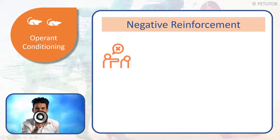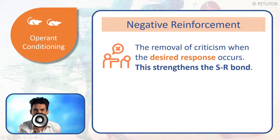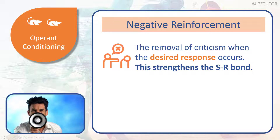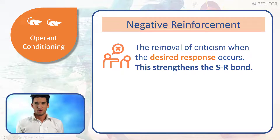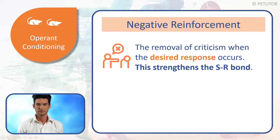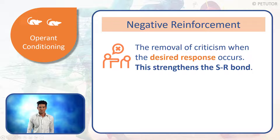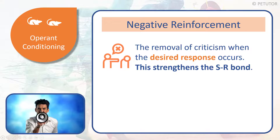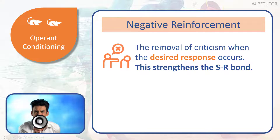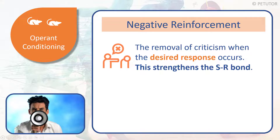Let's look at it in writing. Negative reinforcement is the removal of criticism when the desired response occurs. It's so important that you get this right. The coach takes away the criticism when the desired response occurs, and this leads to strengthening the S-R bond.